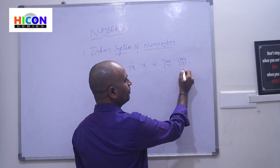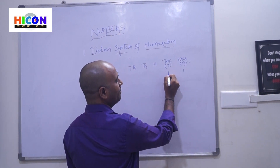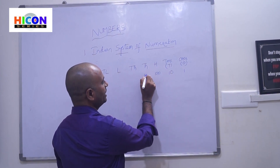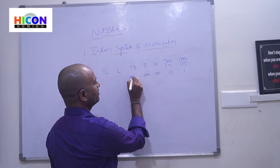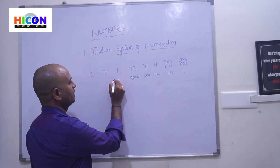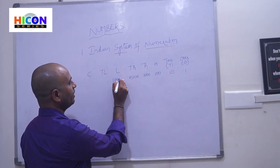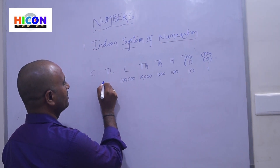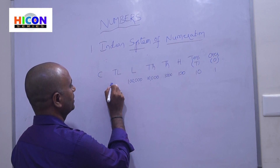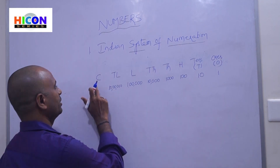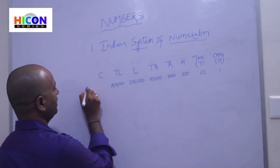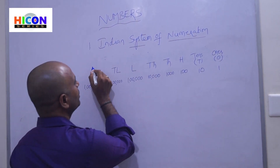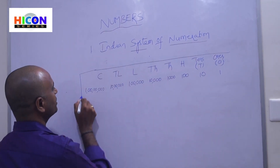The place values are: ones = 1, tens = 10, hundreds = 100, thousands = 1,000, ten thousands = 10,000, lakhs = 1,00,000 (five zeros), ten lakhs = 10,00,000 (six zeros), and one crore = 1,00,00,000 (seven zeros). So in tens there is one zero, hundreds has two zeros, thousands has three zeros, ten thousands has four zeros, lakhs has five zeros, ten lakhs has six zeros, and one crore has seven zeros.